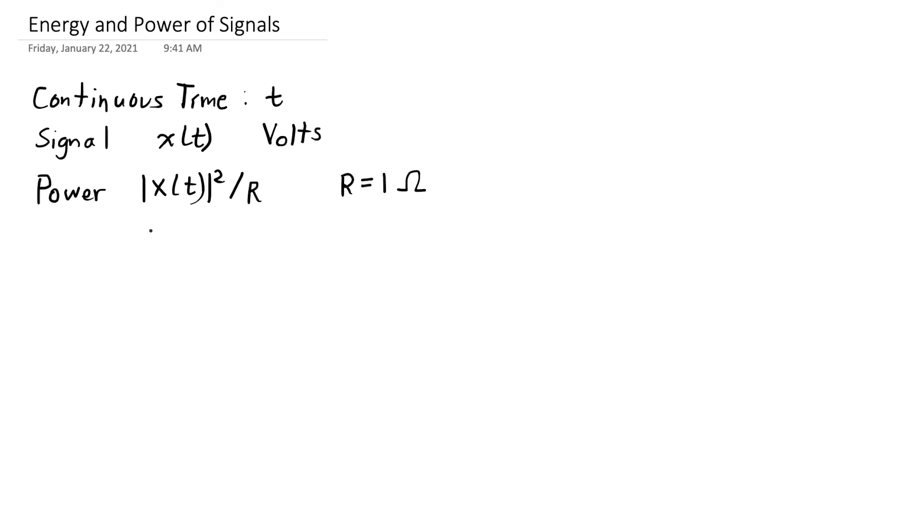When we do that, divide by 1, or we leave it the same, our power is just |x(t)|². That's the instantaneous power.